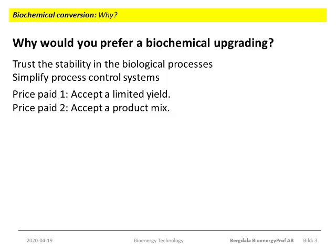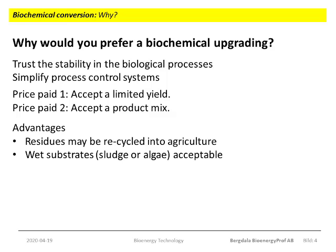The processes will to some extent be self-regulating. So, as long as we accept that the yield from our processes is not always maximized, there will be an option for a relatively simple control of the biochemical processes. The second price we have to pay is that the primary products will be anything but pure. The feedstock to the biochemical processes is called the substrate. The substrate is actually the food for the microorganisms, and since we do not want to poison the microorganisms, the substrate will have to be clear of toxic substances. If the substrate and the process are properly managed, the residual product may well be recycled into agriculture.